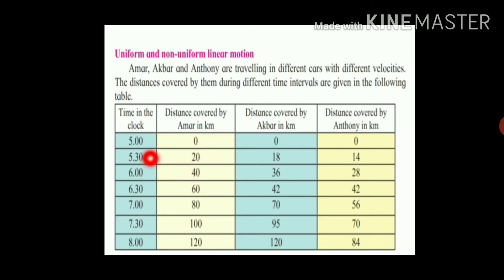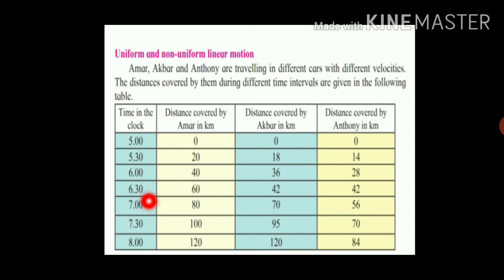In the second 30 minutes, Amar again travelled 20 km. In the third 30 minutes, from 6 to 6:30, he travelled again 20 km. So in every 30 minutes, Amar travelled the same distance — 20 km.